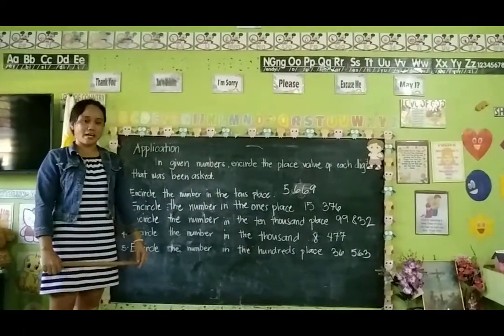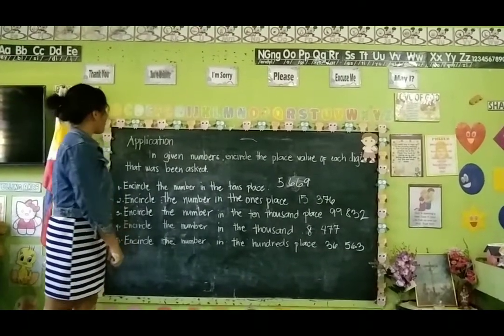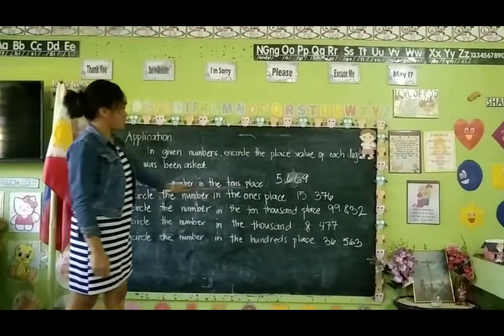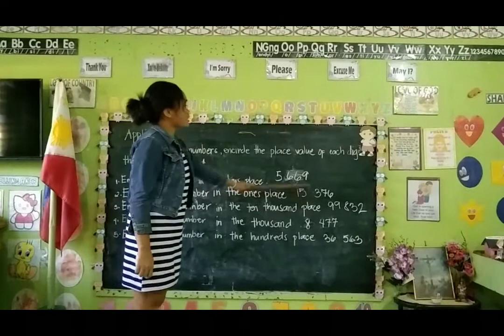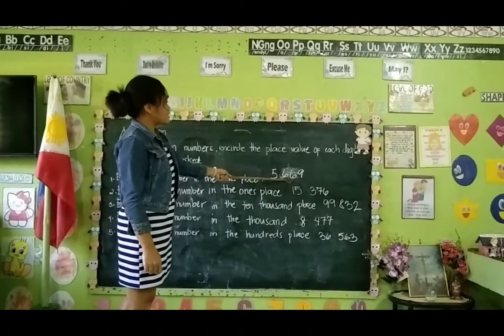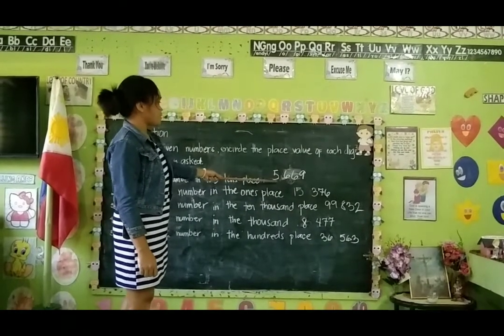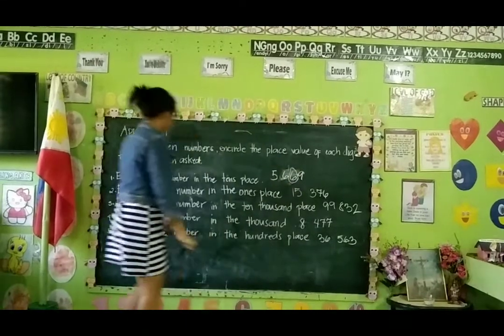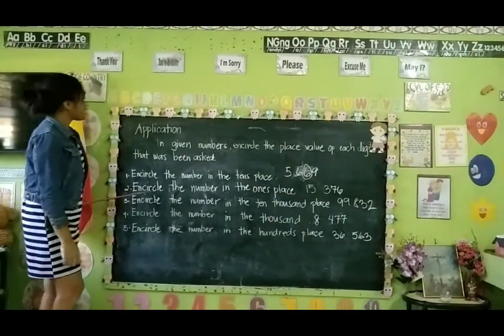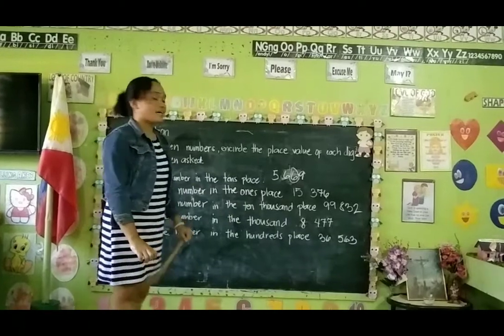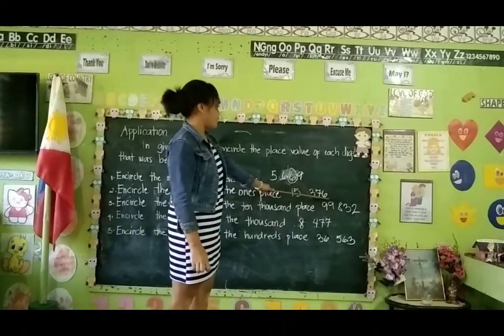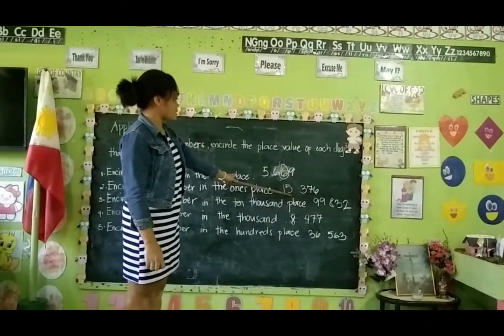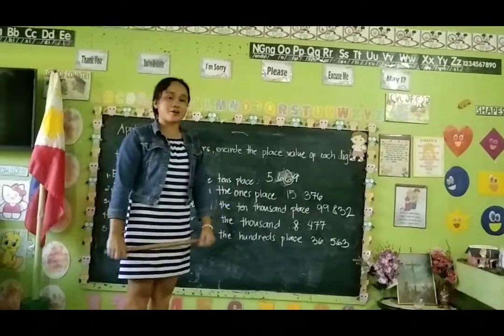So, let's proceed to the definition. In the given numbers, encircle the place value of each digit that is being asked. Number 1: encircle the number in the tens place — 5,669. 9 is for ones place, 6 is for tens place, 6 is for hundreds place, and 5 is for thousands place. For 50,276: 5 is for thousands place and 1 is for ten thousands place. So, the answer is 6.